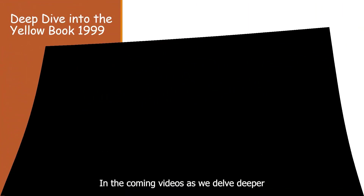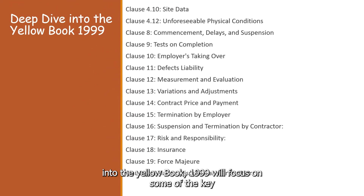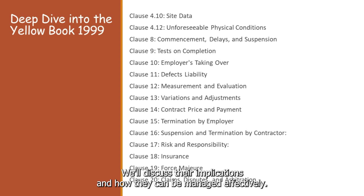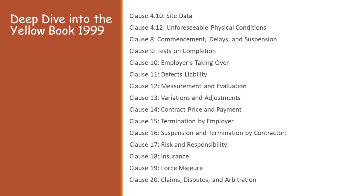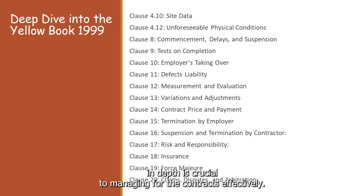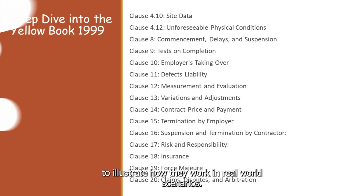In the coming videos, as we delve deeper into the Yellow Book 1999, we'll focus on some of the key clauses that often come into play in construction projects. We'll discuss their implications and how they can be managed effectively. Each of these clauses has its own complexities and nuances, and understanding them in depth is crucial to managing FIDIC contracts effectively. We'll explore these clauses in more detail, including practical case studies and examples to illustrate how they work in real-world scenarios.